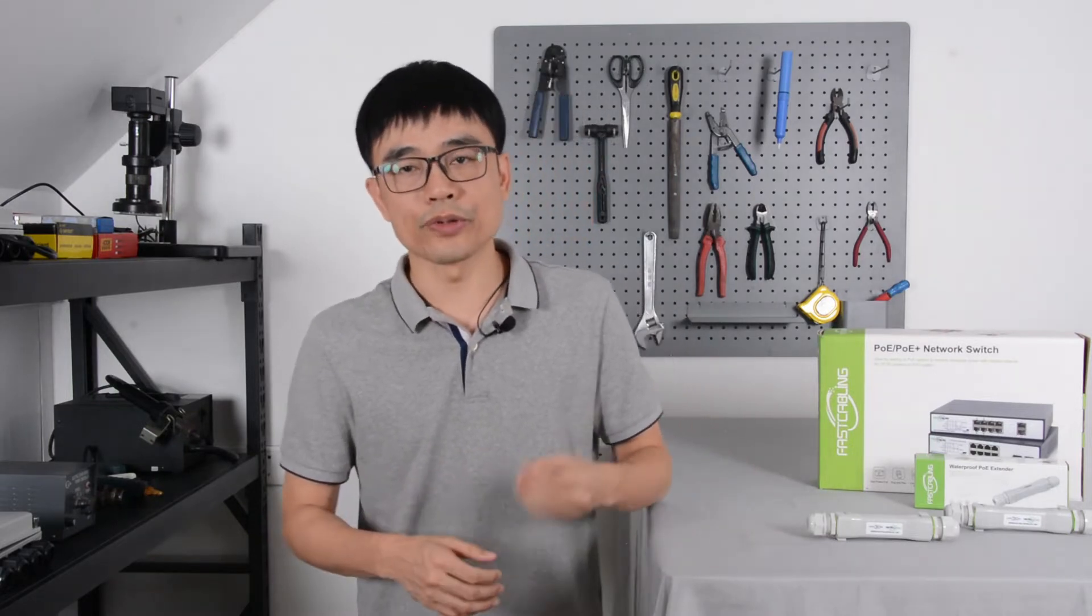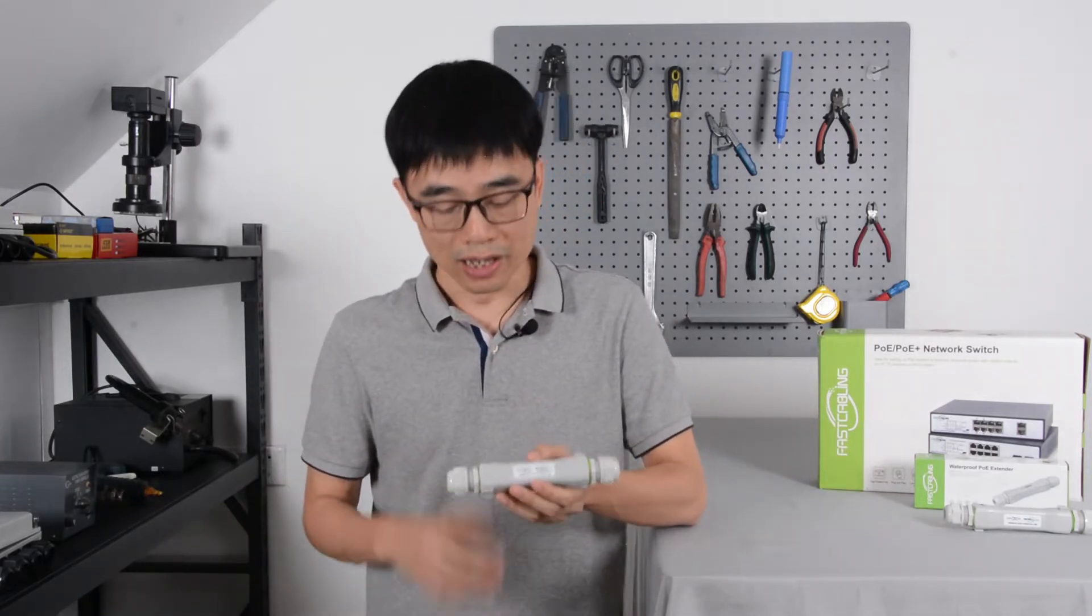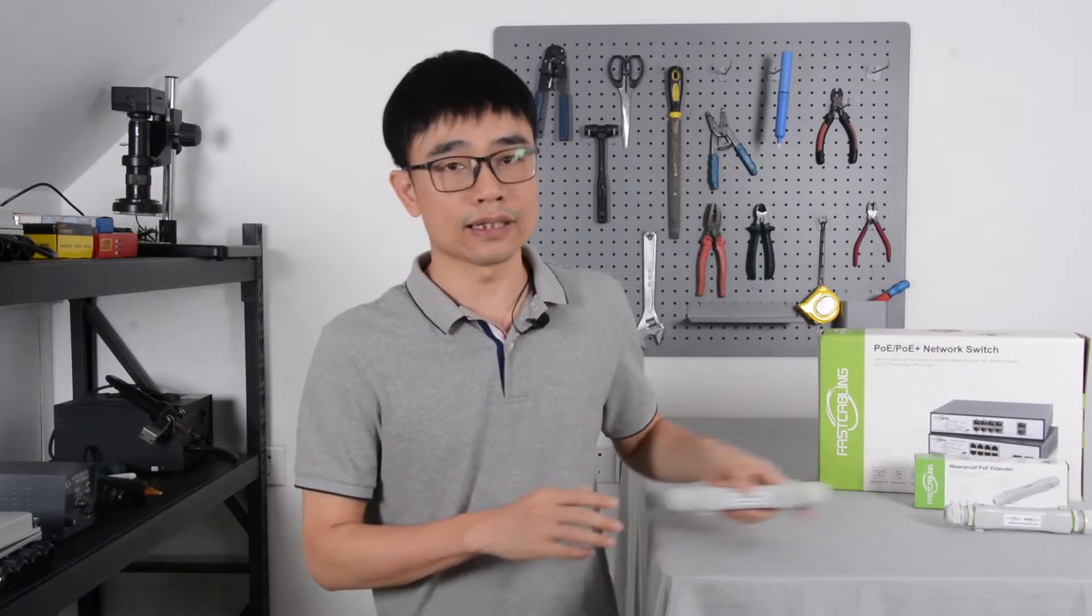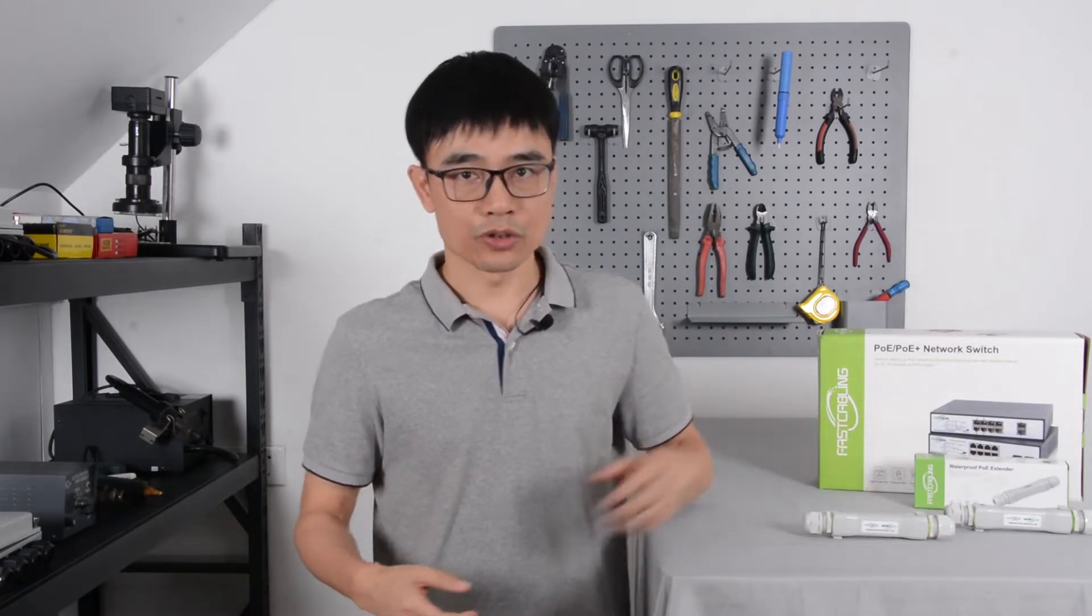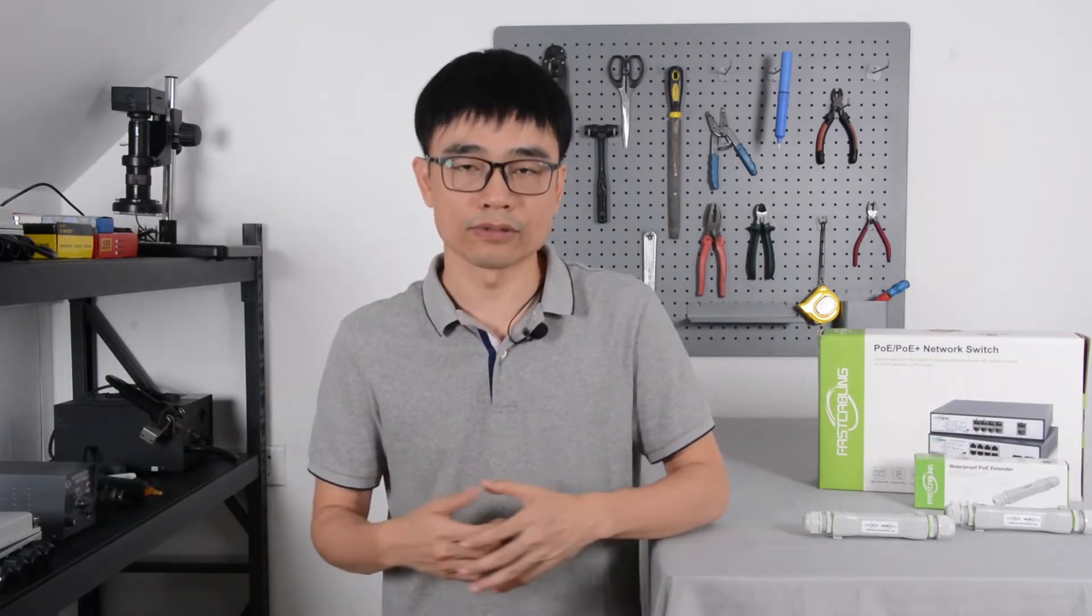As we know, the PoE is limited to about 328 feet. Beyond that, we can use the PoE extender to repeat the PoE network. One PoE extender can provide another 328 feet. So if you need like 1000 feet, you can get two of these daisy chained together to come up with about 1000 feet.